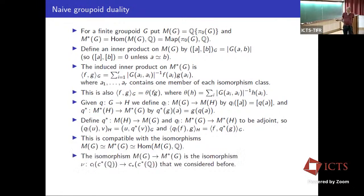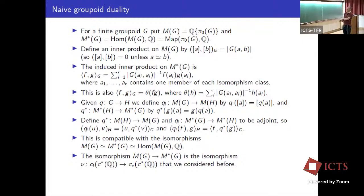Note that the inner product induces an isomorphism from M(G) to M^*(G), and this is the same as the map ν we've been calling: you take Q, apply C upper star Q to get the constant functor with value Q, then C lower shriek gives the colimit — which is M(G) — and C lower star gives the limit — which is M^*(G). The map corresponding to this inner product is just ν.